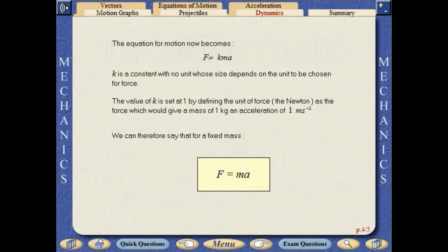The equation for motion now becomes f equals kma. k is a constant with no unit whose size depends on the unit to be chosen for the force. The value of k is set at 1 by defining the unit of force as the force which would give a mass of 1 kilogram an acceleration of 1 meter per second squared. We can therefore say that for a fixed mass, f equals ma.